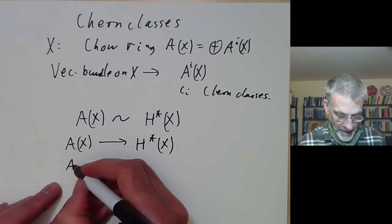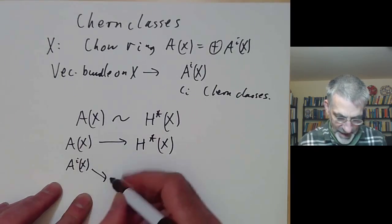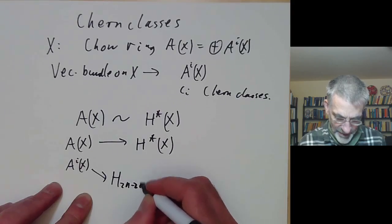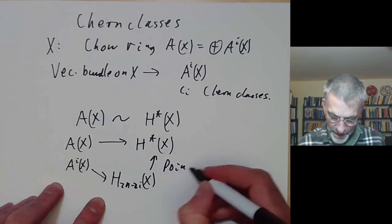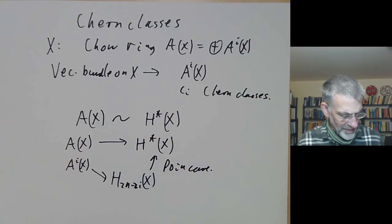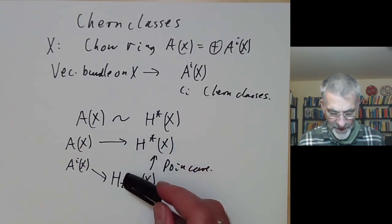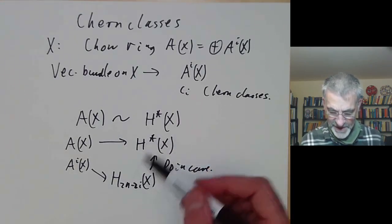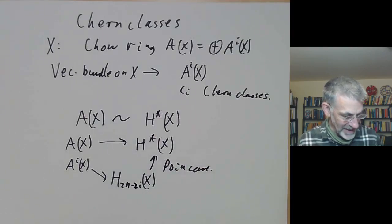If we have an element of the Chow ring — a codimension i cycle — then any cycle gives you an element of the homology group. By Poincaré duality, this corresponds to an element of the cohomology group. I've never been quite sure why one uses cohomology rather than homology; in some cases it's slightly technically easier, but my impression is it's as much a historical accident as anything else.